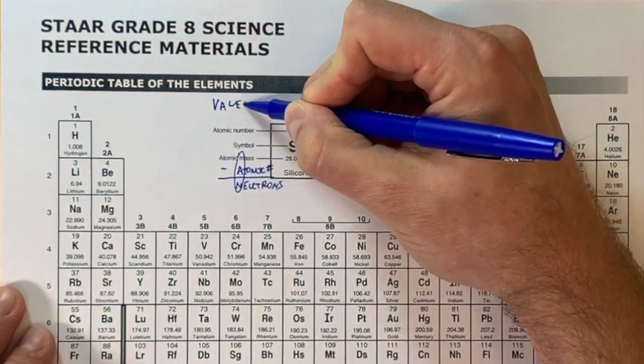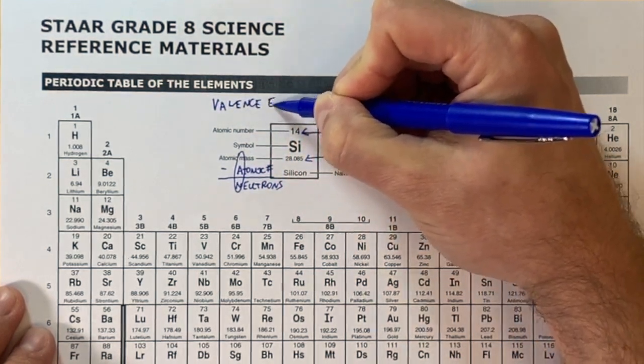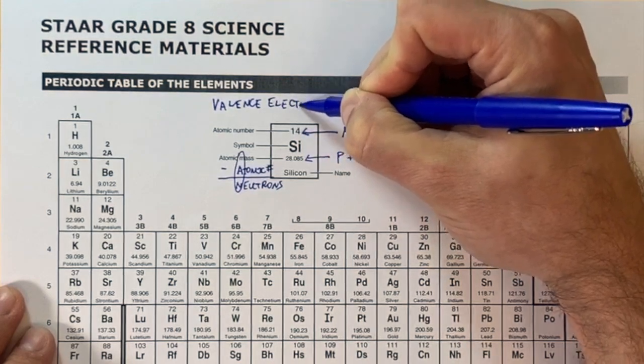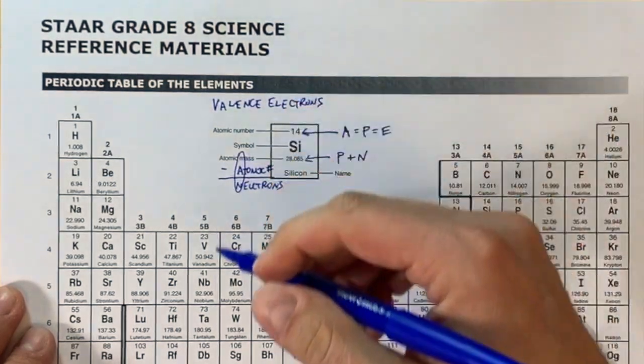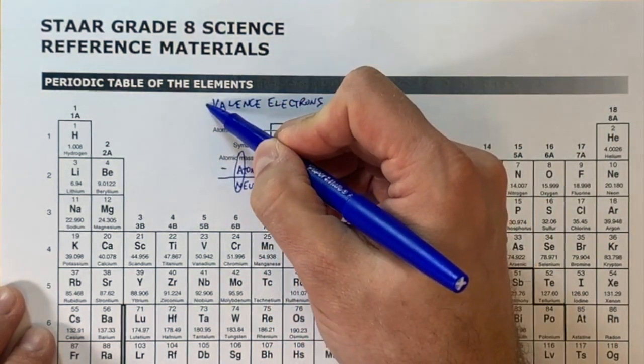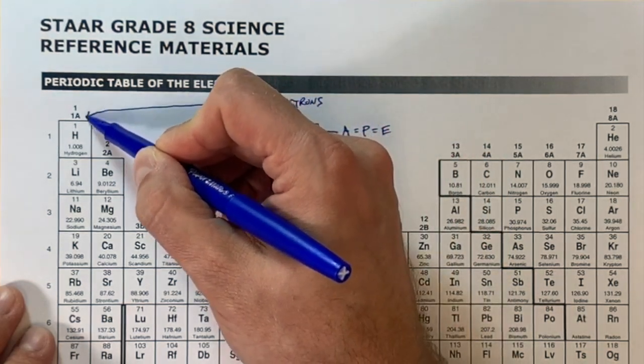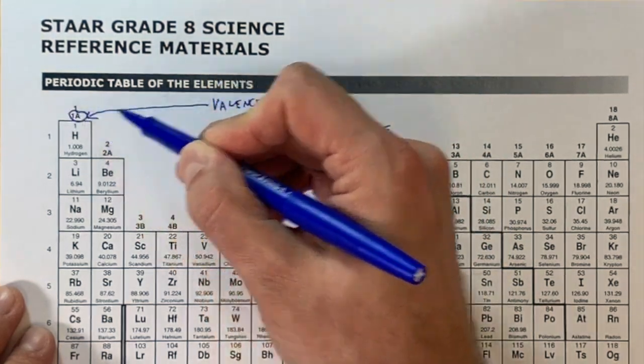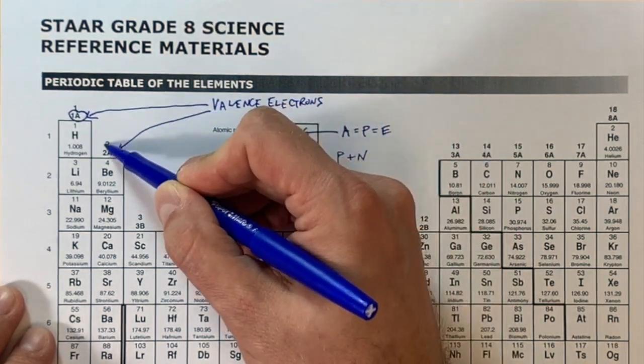Next we're going to move up to the valence electrons. Valence electrons help us determine the chemical properties of elements, including their reactivity. What we're going to do is draw some lines to these little numbers on top of every group or family.